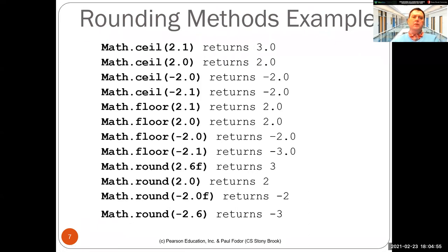So let's see a couple of examples. So the first one is math dot ceiling of 2.1 is 3.0. Math dot ceiling of 2.0 is 2.0 because it's already a double that represents an integer. Math dot ceiling of minus 2.0 is minus 2.0. Math dot ceiling of minus 2.1 is minus 2.0 because for negative numbers minus 2.1 is less than minus 2.0.